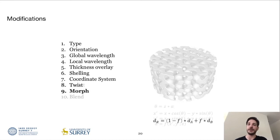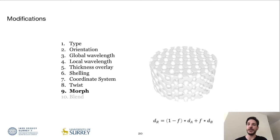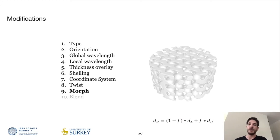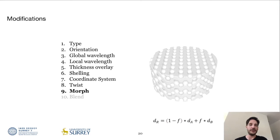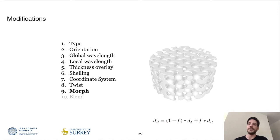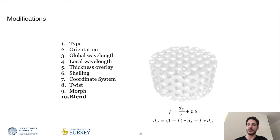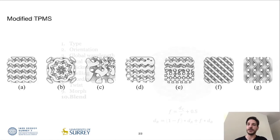The input field can be continuously morphed into another field, for example from one type of TPMS into another, while this modification uses a global factor f. For the blend modification, this factor is also dependent on another field modifier and allows to realize smooth gradient transitions between the two different fields. And these cross sections are a small selection of possible modifications in an overview.